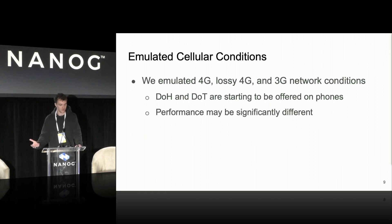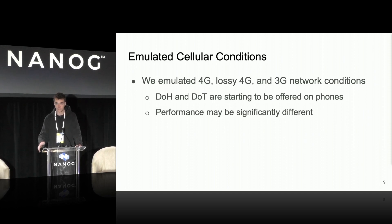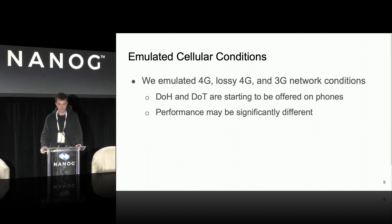We also wanted to emulate different cellular conditions. The reason is that DOH and DOT are being offered on phones — whether it's Cloudflare's 1.1.1.1 app or Android 9, which supports DOT. We thought it important to measure how these protocols perform on phones given increasing adoption of encrypted DNS. We weren't able to set up measurements on a real mobile network, so we emulated cellular conditions: 4G, a lossy 4G with 1% additional packet loss, and 3G. These conditions were based on numbers from an OpenSignal report.